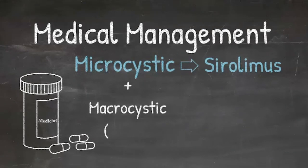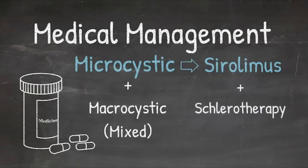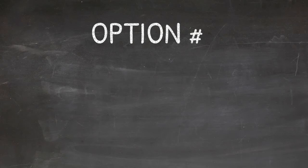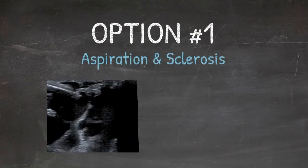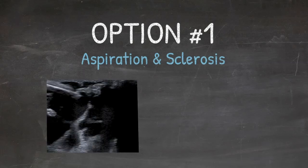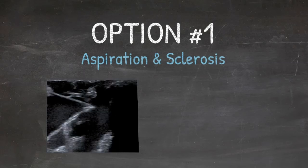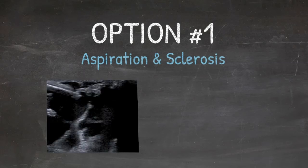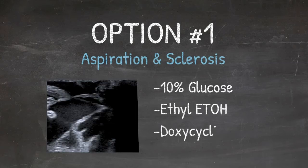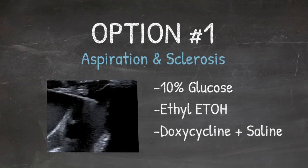If the cysts are mixed lesions including micro and macrocystic components, you can use sirolimus in combination with a sclerotherapy procedure to treat the different portions of the cyst. When cysts are macrocystic, we often treat them initially with aspiration and sclerosis to reduce the cyst and symptoms without requiring surgical resection. Different agents can be used for sclerosis, including 10% glucose, ethyl alcohol, or often doxycycline mixed with saline.